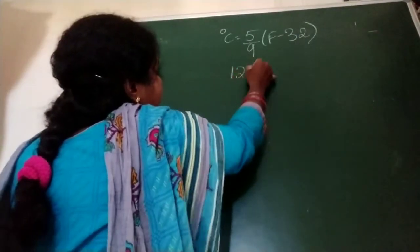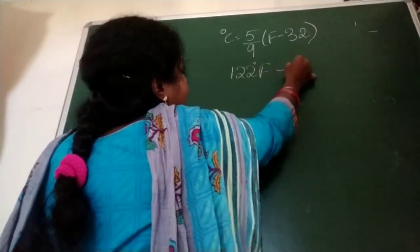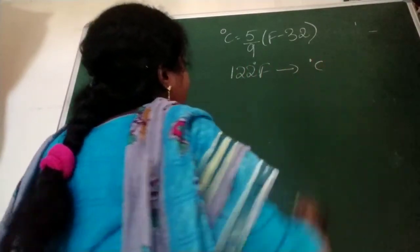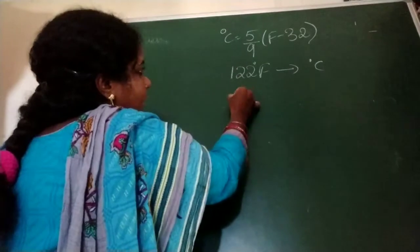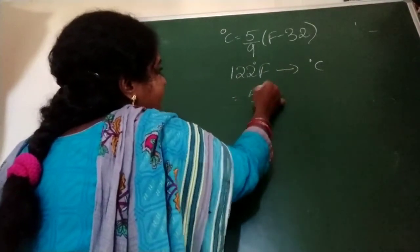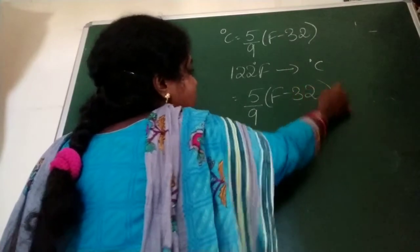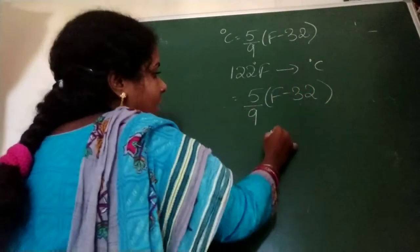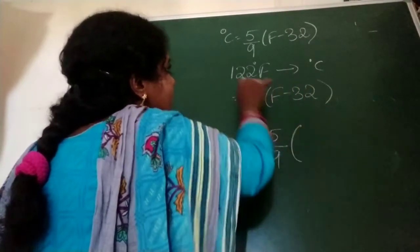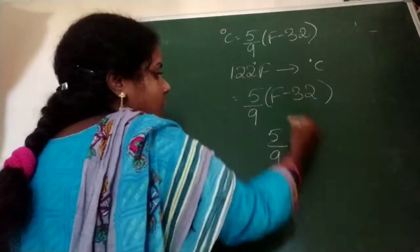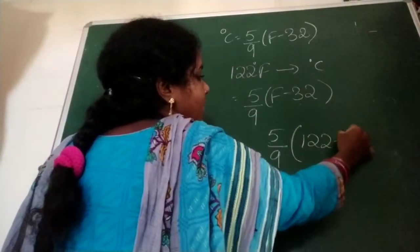Question is 120 degree Fahrenheit convert into the Celsius scale. Now formula is 5 by 9 into F minus 32. Here F, how much they given? 120 degree Fahrenheit.